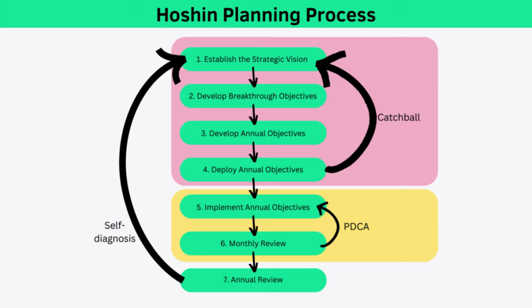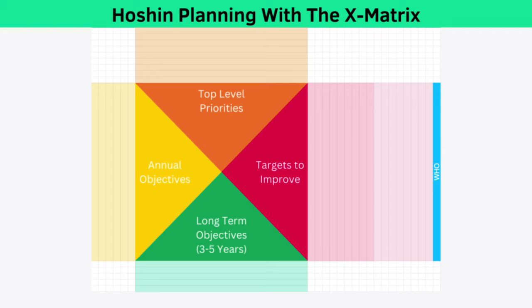In this step, it's important not to pick too many objectives so you remain really focused on what's strategically important. Next, you develop your annual objectives — these lay out what you think you need to achieve in the next year to be in with a fighting chance of hitting your breakthrough objectives. With your annual objectives in place, you deploy them to every employee using the Catchball technique. A tool commonly used to facilitate Catchball is called the X Matrix, though it isn't strictly part of Hoshin Planning.